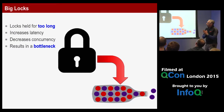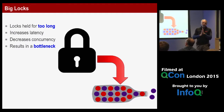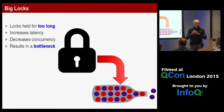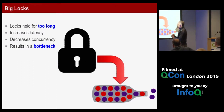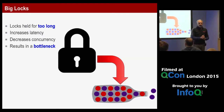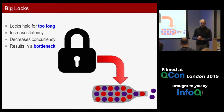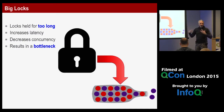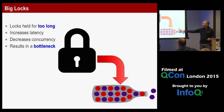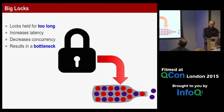How long do you hold a lock? If you begin a transaction and do seven million things inside it, you're holding many locks for a long period. Big locks increase latency and decrease concurrency — everybody wants to share it and you create a bottleneck. Make your locks as small as possible.